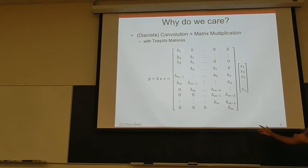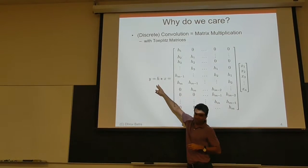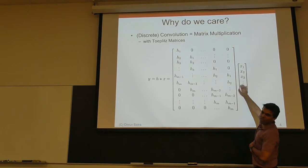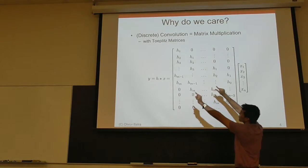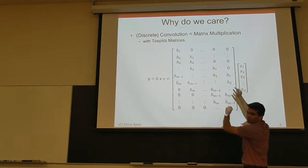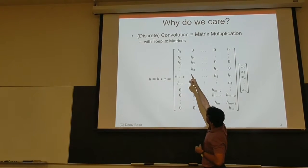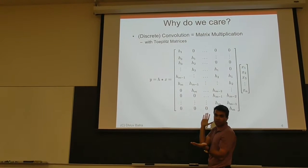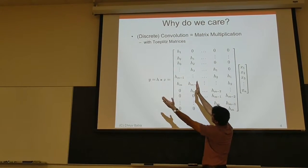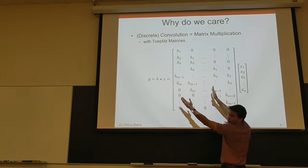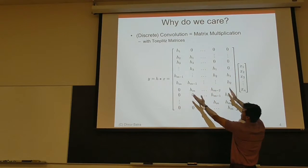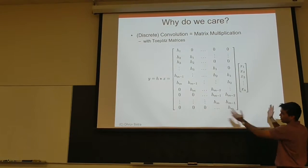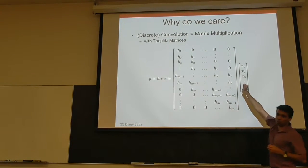If you think of a convolution between a signal x and a filter h, you write x as a column vector, take h and start sliding it across, copying and chopping. This is discrete convolution — or cross-correlation, since we're not doing the flipping trick. h1 enters, then h1 and h2, then h1, h2, h3, and so on. The rows of this matrix have that filter passing through and getting chopped — so this is a Toeplitz matrix by construction.